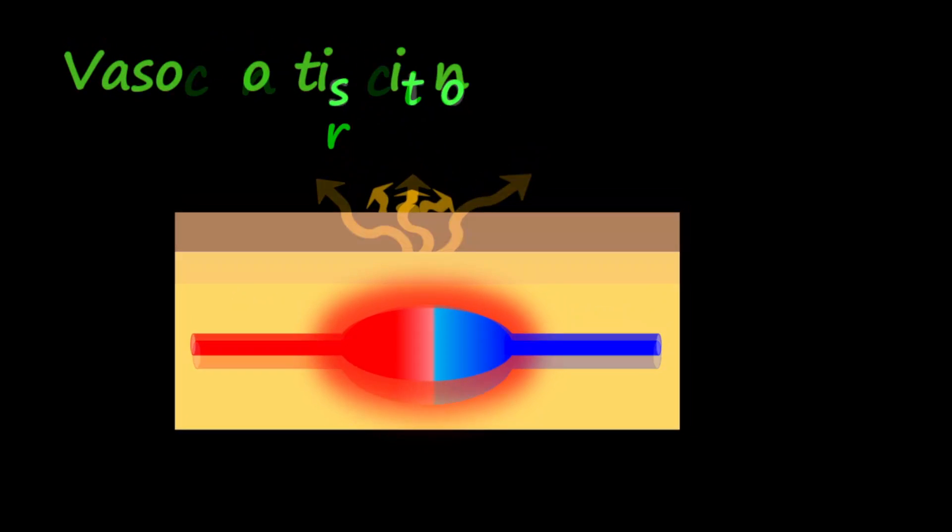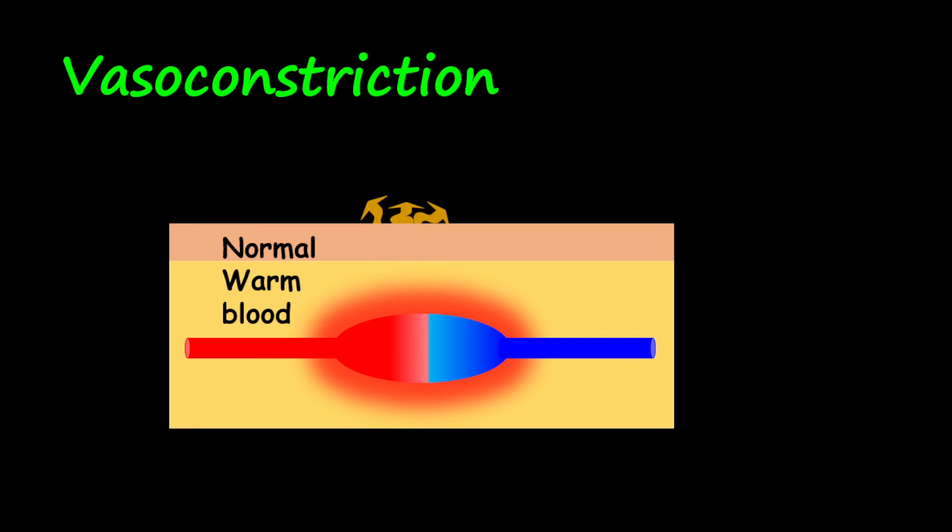Now let's look at this in terms of constriction. Warm blood is coming from the body. It flows towards the surface of the skin. Because the blood capillaries are further away from the skin, little to no heat will be lost. And so therefore the blood that is flowing back towards the heart will be of a similar temperature.